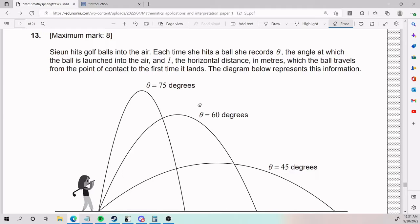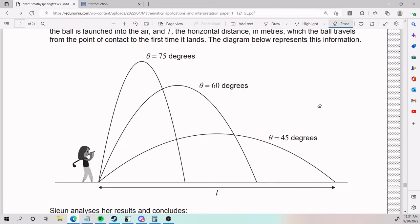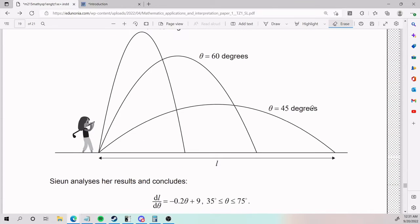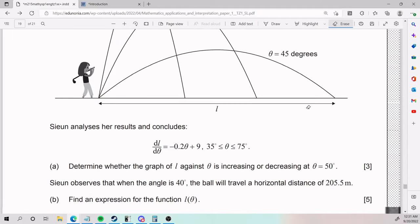And L, the horizontal distance in meters, which the ball travels from the point of contact to the first time it lands. The diagram below represents this information. There it is. Sion analyzes her results and concludes that, I don't know how she did that, but she's a genius.